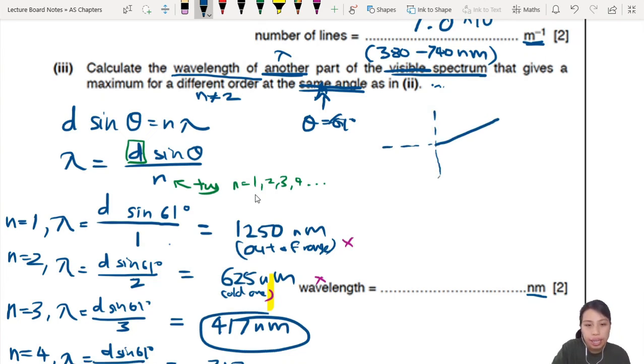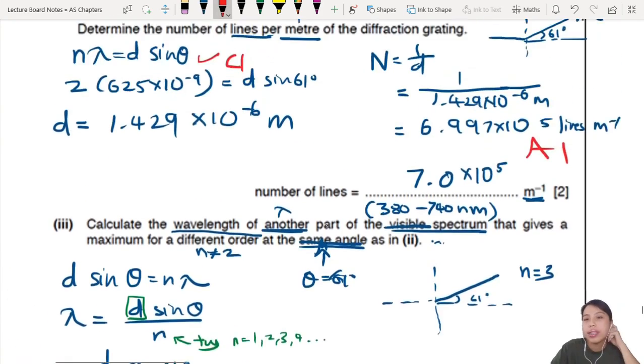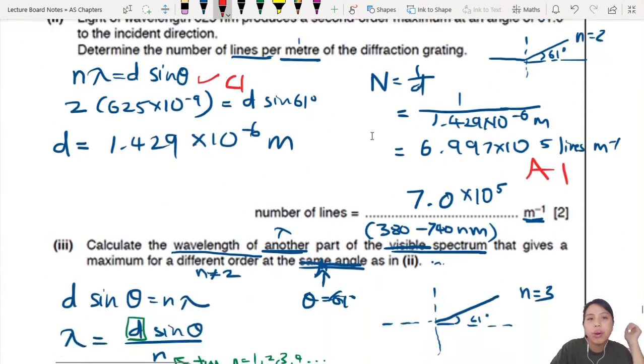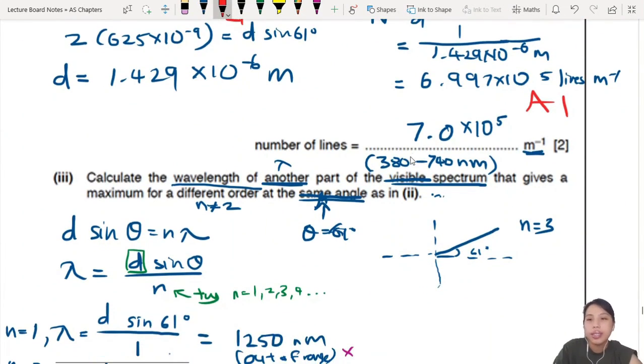If we draw the diffraction grating, this blue color light is the third order with an angle of 61 degrees. It will be the same as the previous one, 625, probably orange. I'm just going to draw red. Actually I can draw orange. It will be the same overlap as this, n equals to 2 of the red color. They will be the same angle. Same angle, 61 degrees. That's what it means. You're just trying to look for something that has the same angle, a different order.